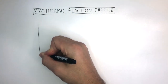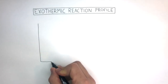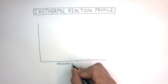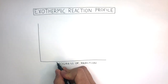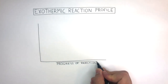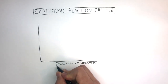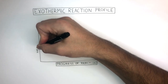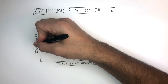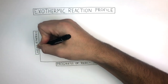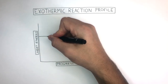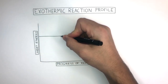Here I'm drawing the y-axis and the x-axis. Progress of reaction goes on the x-axis, and you can think of this as being time, and heat energy goes on the y-axis.